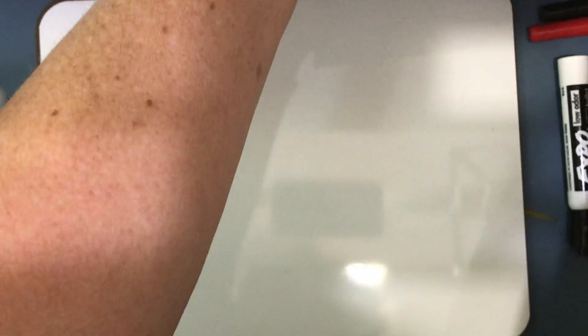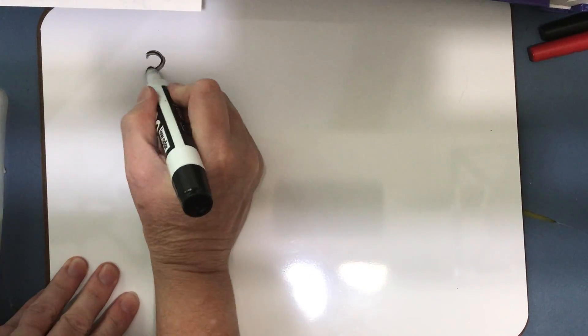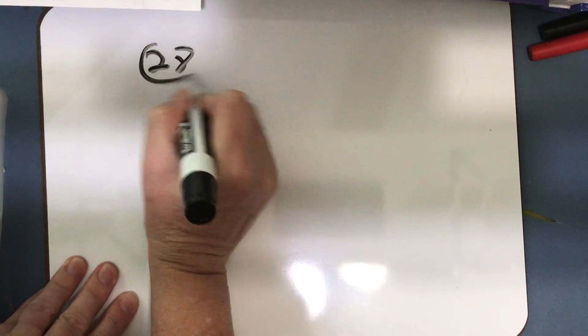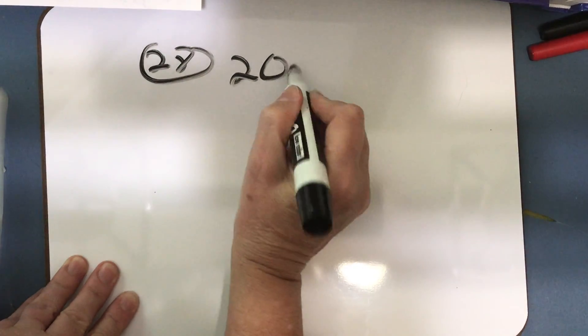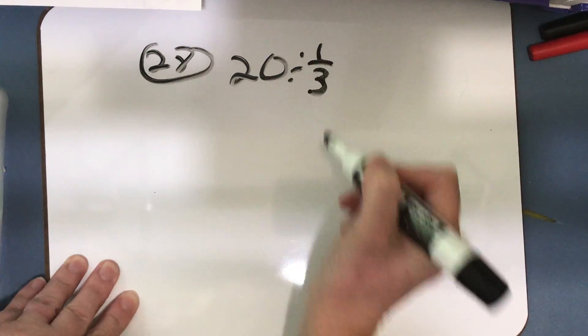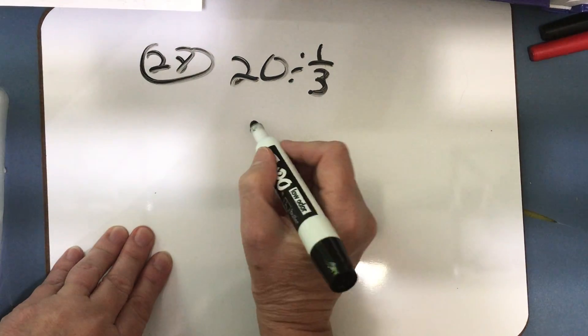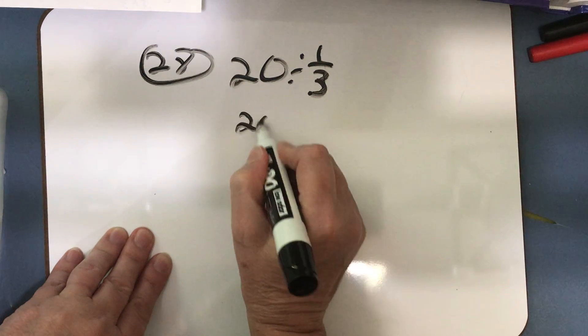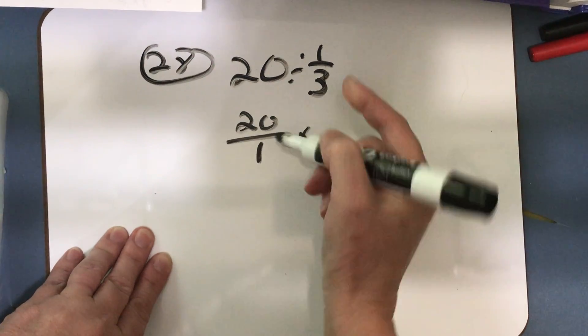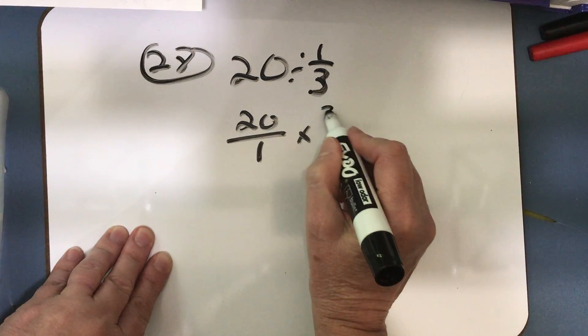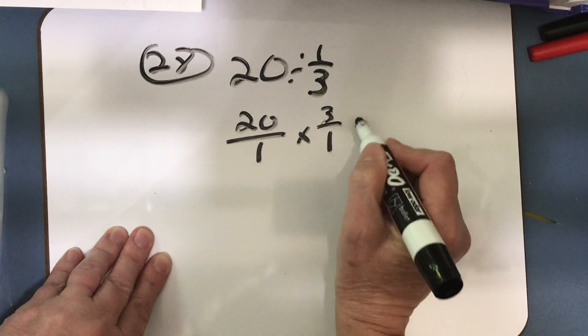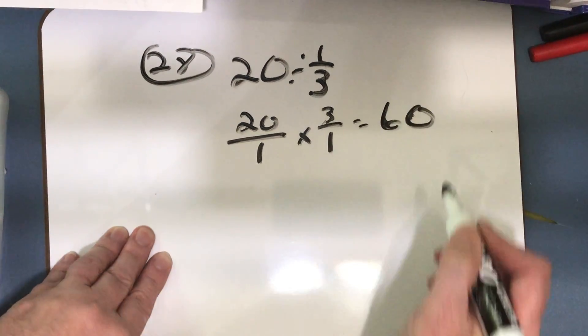I'll start with number 28. Number 28 is dividing a whole number by a unit fraction. Number 28 is 20 divided by 1/3. Remember, multiply by the reciprocal of the divisor. So I change this to a fraction — the reciprocal of 1/3 is 3/1. That will equal 60.